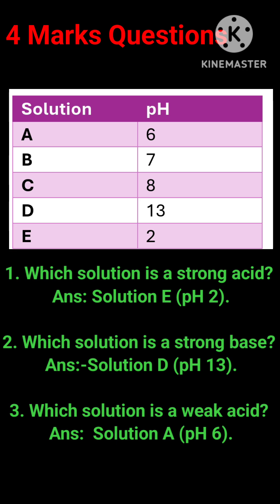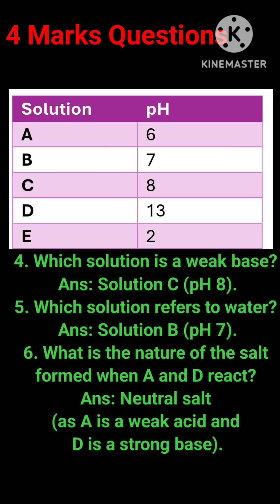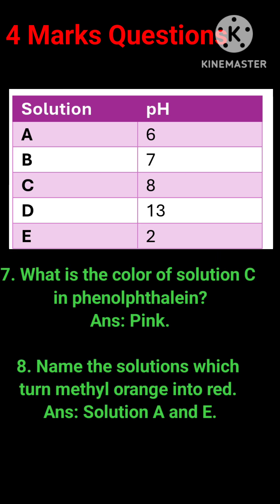(4) Which solution is a weak base? Answer: Solution C, pH 8. (5) Which solution refers to water? Answer: Solution B, pH 7. (6) What is the nature of the salt formed when A and D react? Answer: Neutral salt, as A is a weak acid and D is a strong base. (7) What is the color of solution C in phenolphthalein? Answer: Pink. (8) Name the solutions which turn methyl orange red. Answer: Solutions A and E.